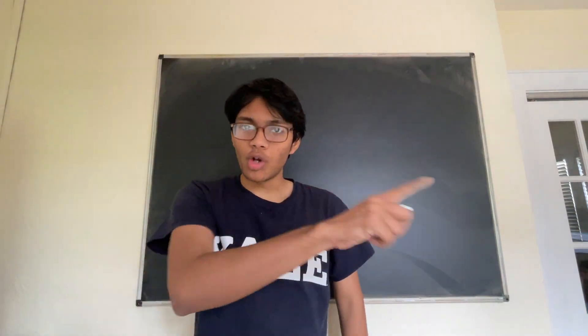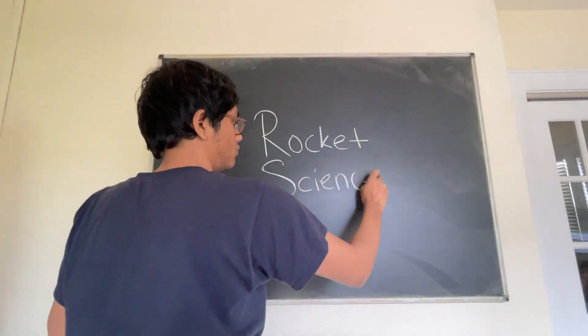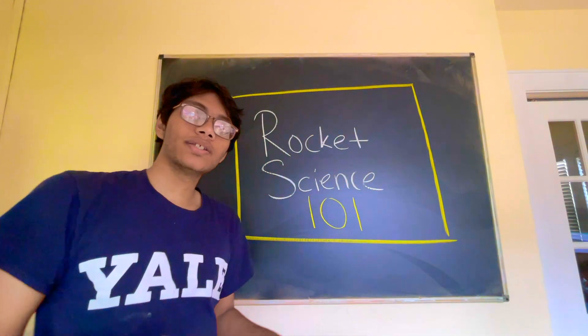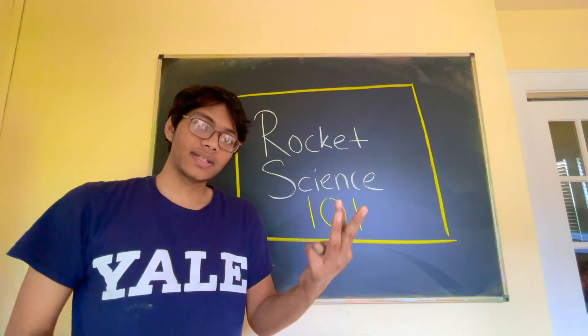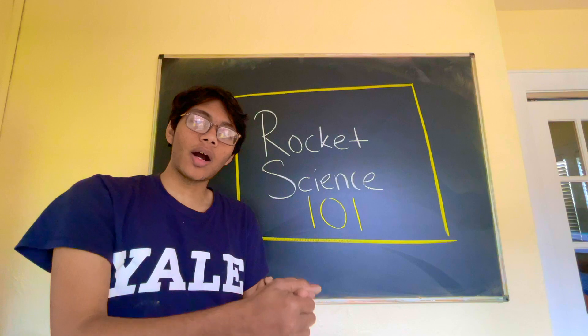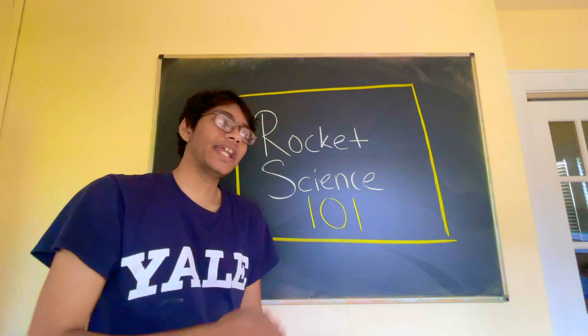Folks, welcome to Rocket Science 101. Today we're going to talk about three different methods: the Newtonian method, the Oberth effect, and the Edelbaum maneuver to escape a circular orbit at a high speed. Let's go ahead and check it out.